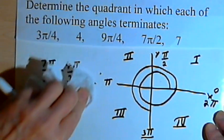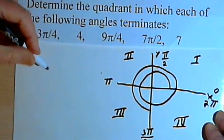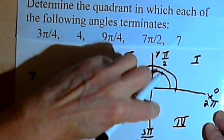And for the last one, it looks like once again I've just got a radian measure. I've got 7. So let's see what happened with the 7. Let me clean this up a little bit.